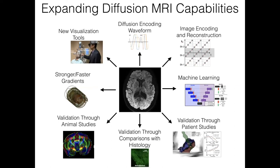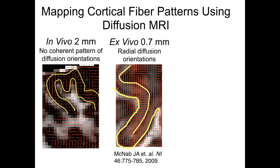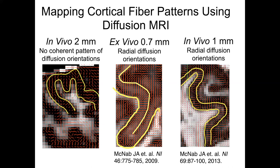Looking at diffusion encoding waveforms is an exciting area with lots to explore, but another way to expand capabilities is improving imaging encoding and reconstruction. Part of our work here is motivated by my longstanding interest in cortical fiber patterns and mapping those with diffusion MRI. Conventionally for in vivo two-millimeter acquisitions, you don't really see coherent cortical fiber patterns. But during my PhD scanning ex vivo brains, we started to notice them, and as in vivo acquisitions improved, we could see them in vivo as well.